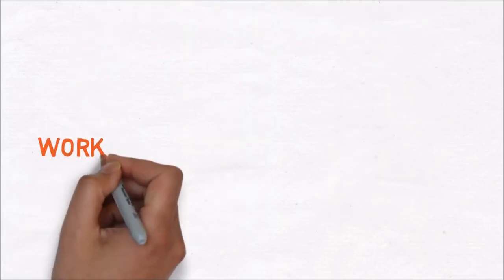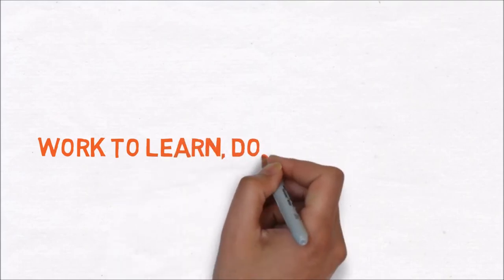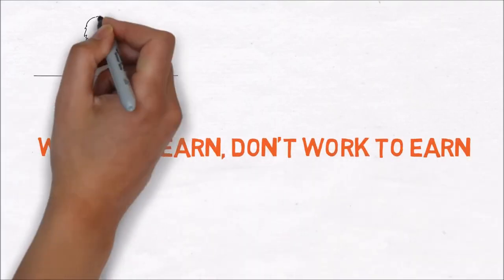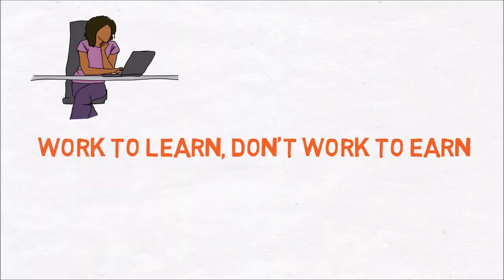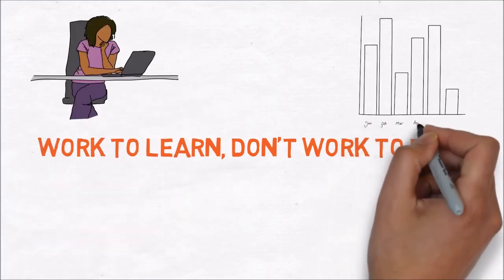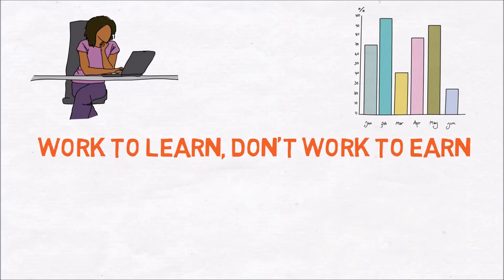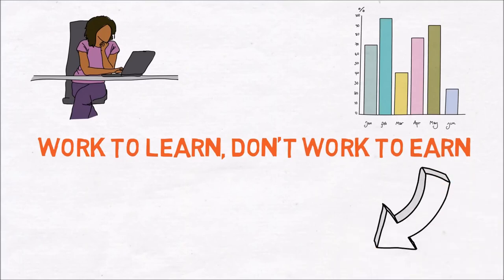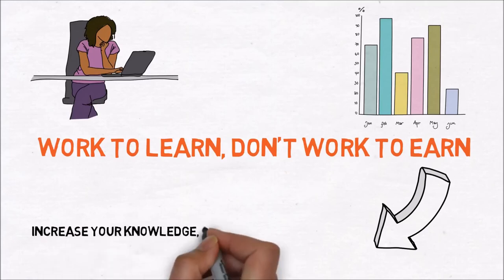The fifth and last most valuable lesson that you can learn from this book is: work to learn, don't work to earn. You should find a job where you can learn more about skills like sales, marketing, accounting, and the other skills I've mentioned. This will increase your knowledge, which you can use for building financial freedom.